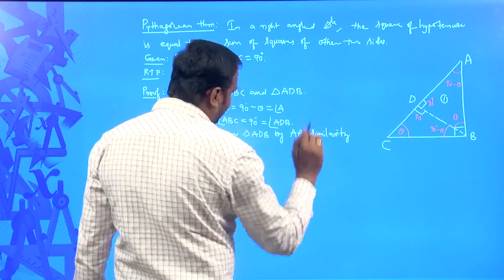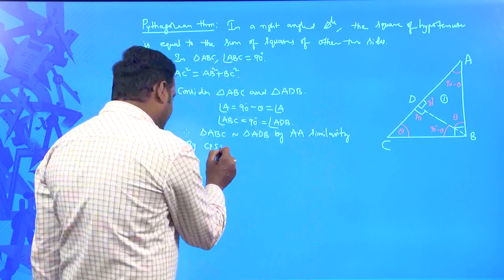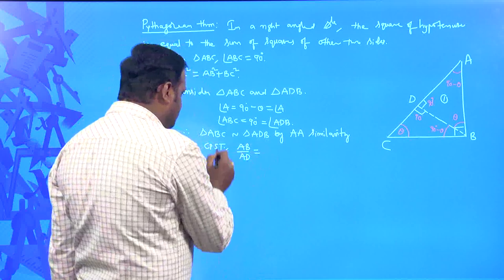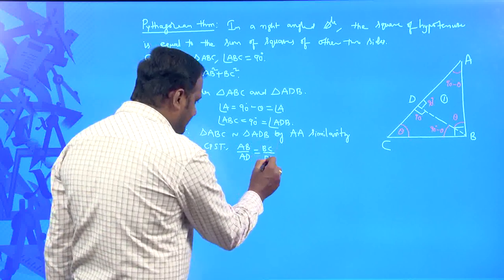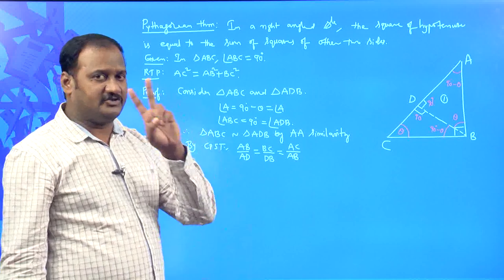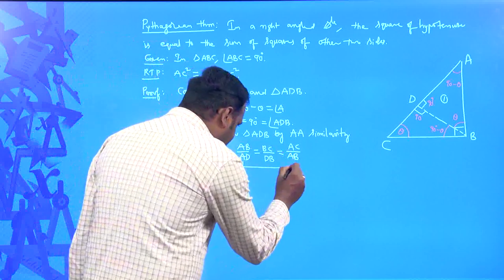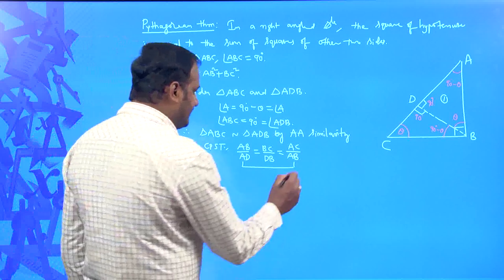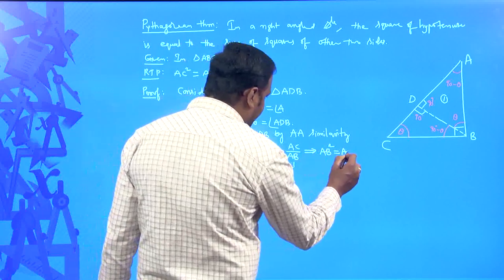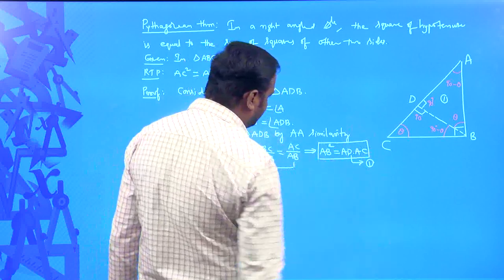Since those two triangles are similar, by CPST: AB/AD = BC/DB = AC/AB. Observing these three ratios, AB is repeated. Considering those two ratios and cross multiplying: AB × AB = AD × AC, so AB² = AD × AC. This is the first equation.